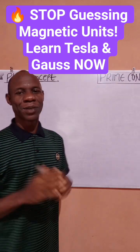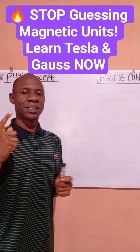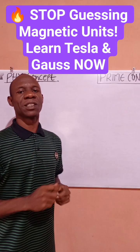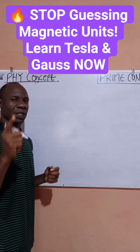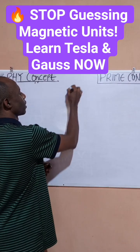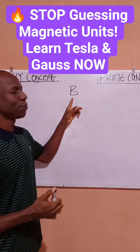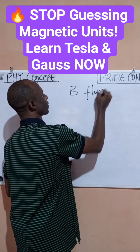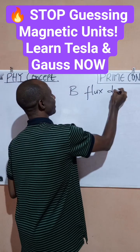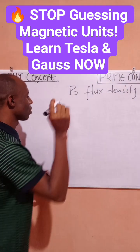Hello guys, this is Prime Concept. In this short video I want to talk about the different units of magnetic flux density B, which a lot of students would find very useful. Remember, we said in our previous videos that B represents magnetic flux density. So what are the various units of magnetic flux density you need to know?